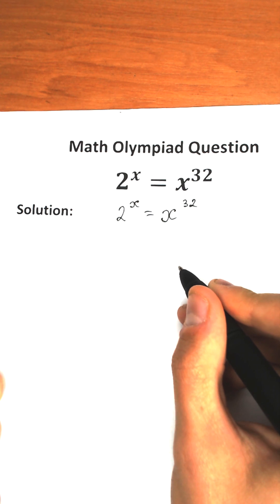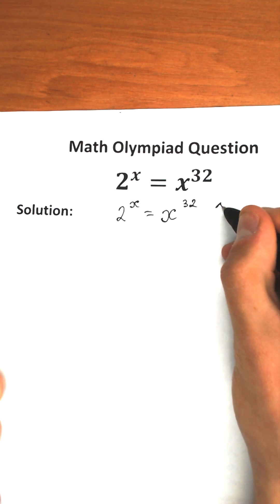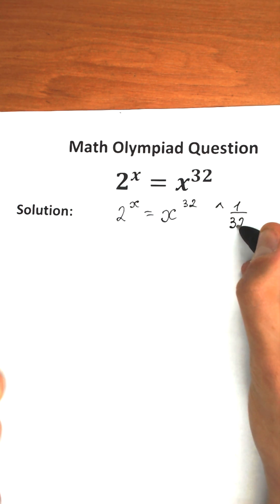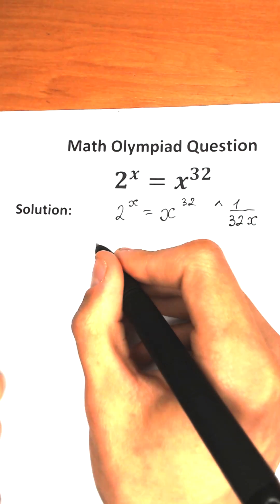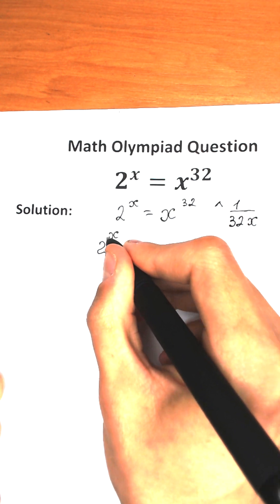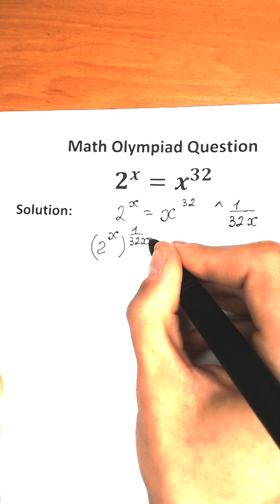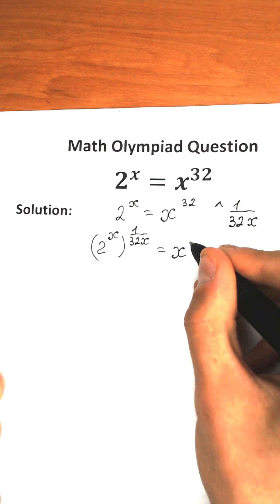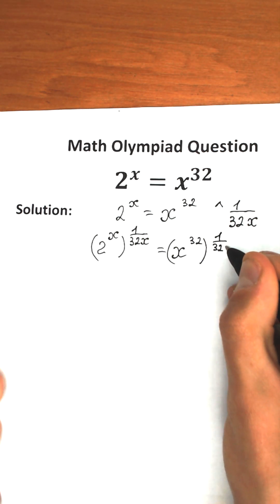Right now let's raise both sides to the power 1 over 32x. So we're raising both the left hand side and right hand side to the power 1 over 32x. So on the left hand side we have 2 to the power x raised to the power 1 over 32x, and on the right hand side we have x to the power 32 raised to the power 1 over 32x.